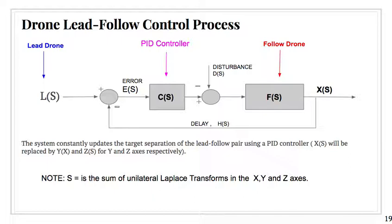This is the chart that shows our control process. As you can see, there's a lead input for the drones, which then leads us to the PID controller, and as an output, we're given the follow drone. This has a small delay, but the system constantly updates the target separation, and as a result, the PID varies.